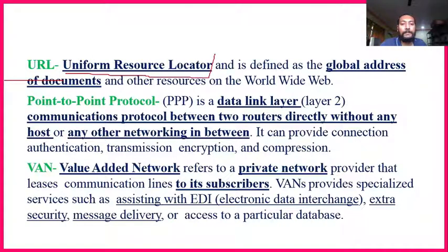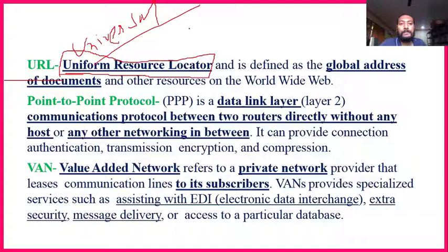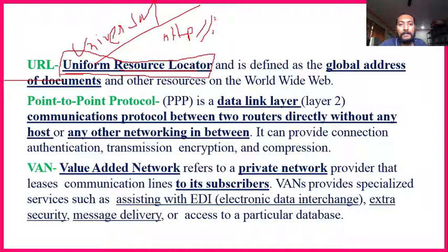URL — Uniform Resource Locator — some places also say 'Universal Resource Locator' — both are the same. When we type HTTP:// double slash then www.something, that address is called the URL. It is a global address. PPP — Point to Point Protocol — is used for joining two networks together, connecting two networks at a point.